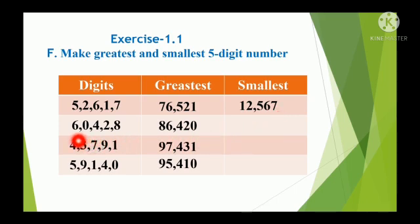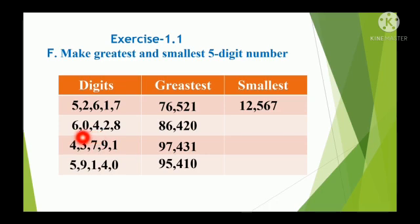In the second example, there is a 0. When 0 is present, we cannot start with 0 because 0 is the smallest digit here, but we cannot start a number with 0. So we take the next bigger digit, which is 2, first, then write 0. So for digits 0, 2, 4, 6, 8: the smallest number is 20,468.